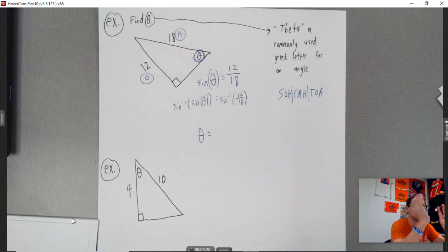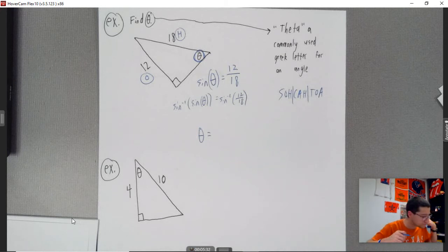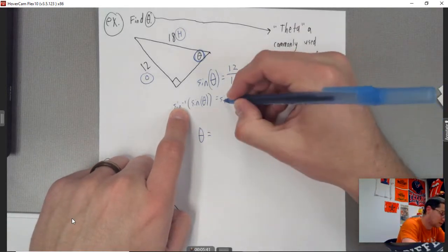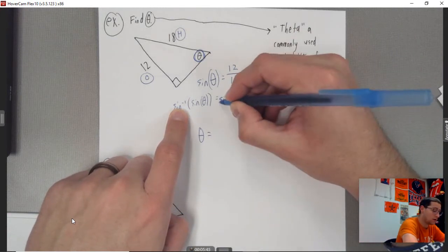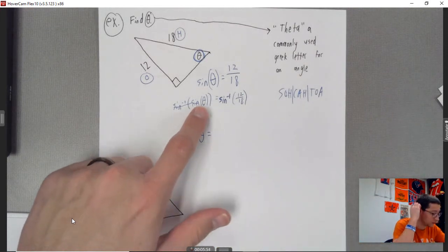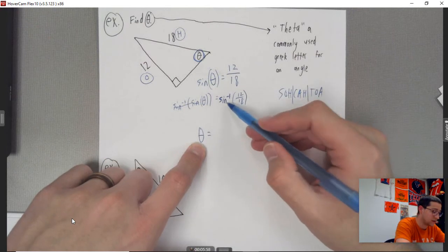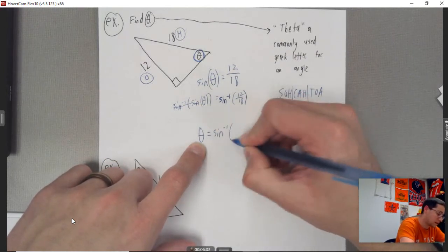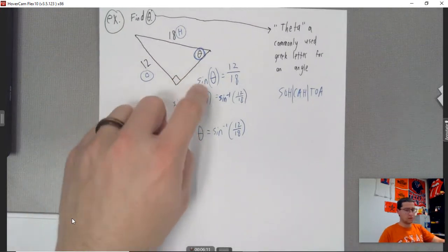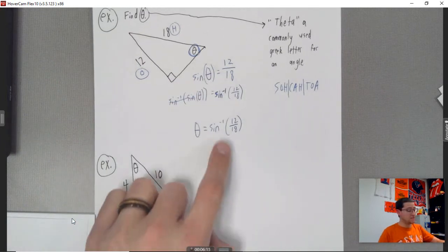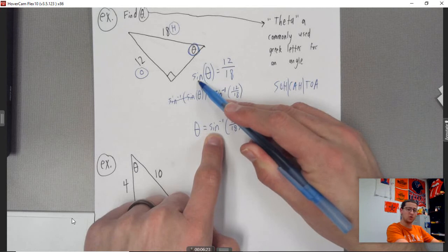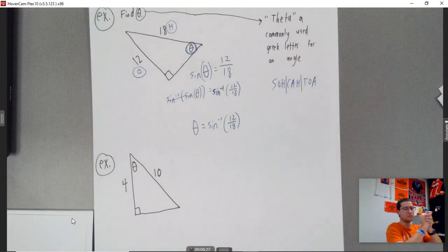The inverse is essentially undoing a process — like switching x and y, inverting the equation. So sine inverse cancels sine, and I'm left with exactly what I was looking for: theta equals sine inverse of 12 over 18. Notice that for regular sine, the input is an angle, but for sine inverse, the input is the ratio of sides. The same applies to cosine and tangent.